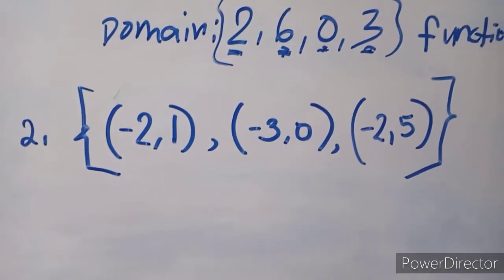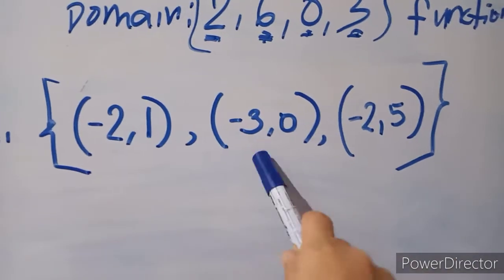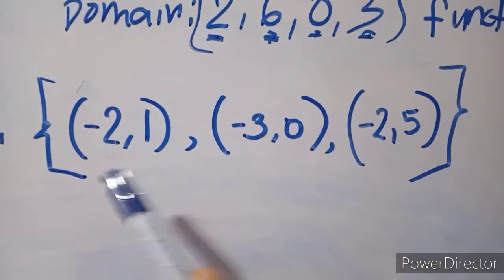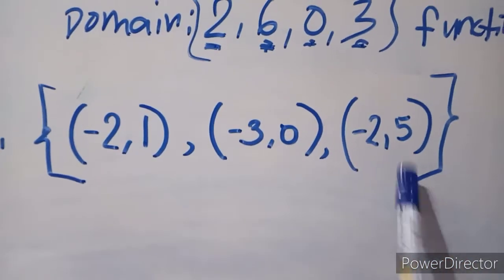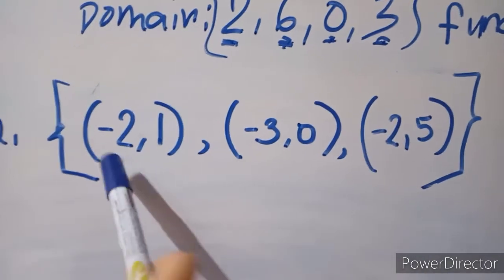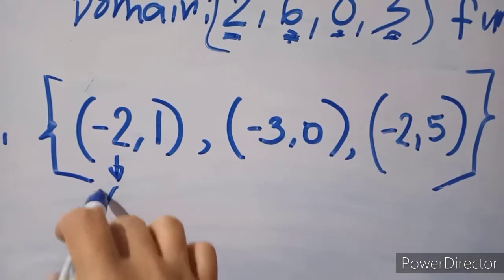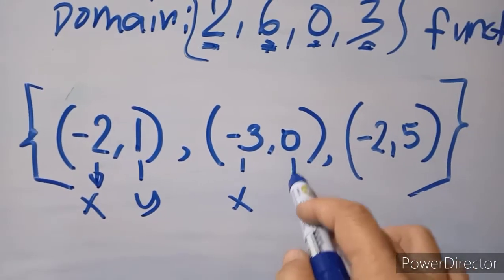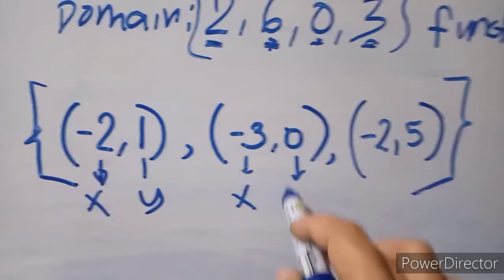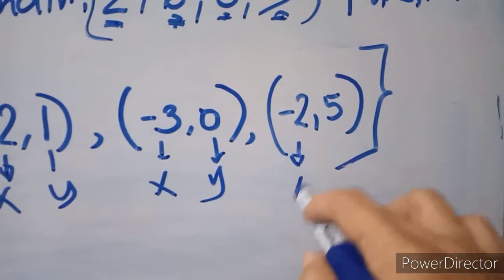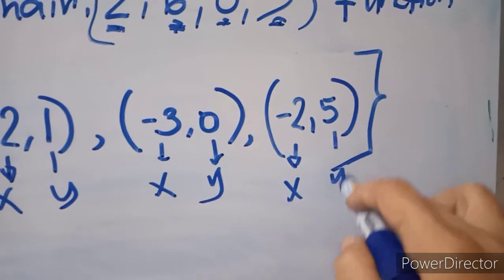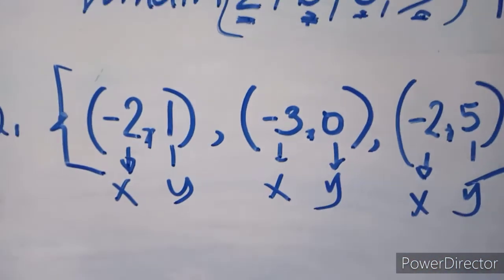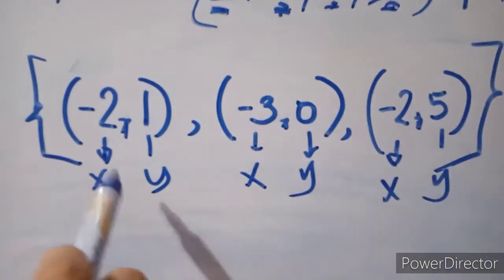Now for the second example, we only have 3 ordered pairs. Always remember, the first element is our x and the second is our y — x and y, x and y, x and y. So negative 2 is our x, and the second element is our y. And in the third ordered pair, negative 2 is our x and 5 is our y. Always, x comes first.